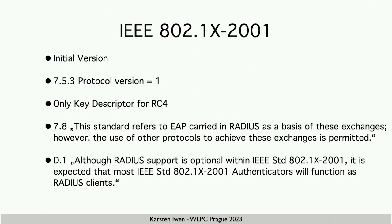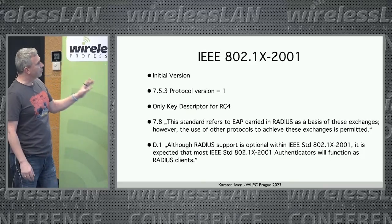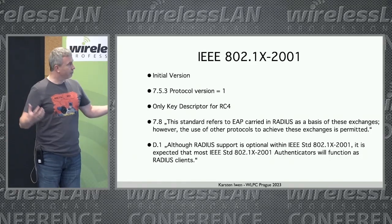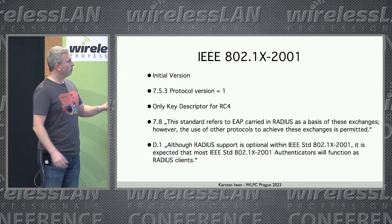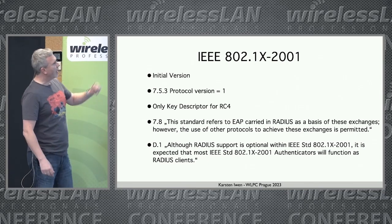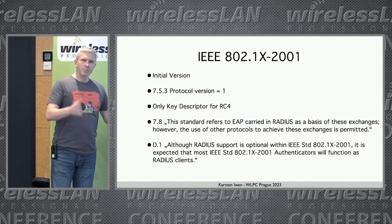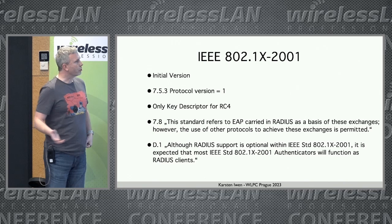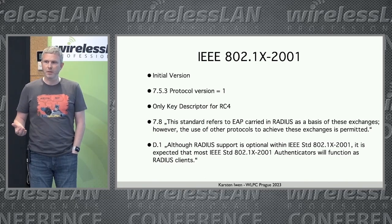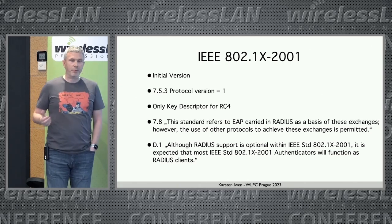The different versions — I don't have every feature here, but here's what I think is interesting. Most of the stuff is not relevant for wireless. 2001 is the initial version; the header protocol version is one. There is already a key descriptor to communicate key information, but only for RC4. The standard defines a AAA protocol to communicate between the authenticator and the authentication server, and it's expected to be RADIUS — but the standard also says it could be something else.